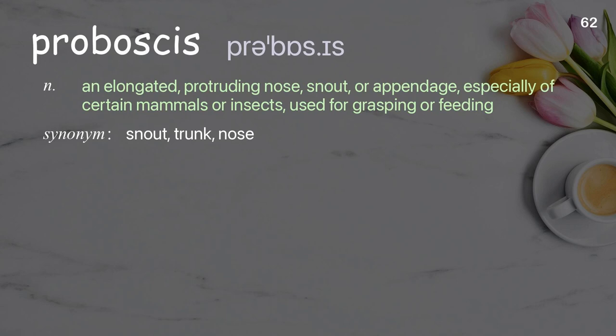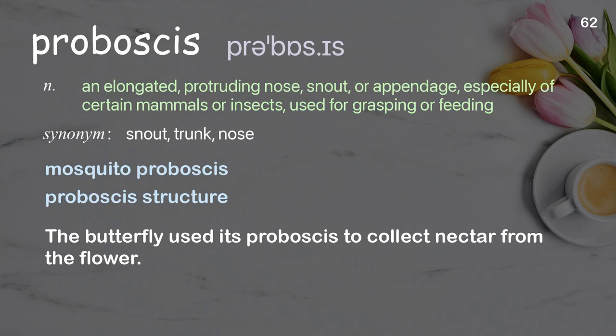Proboscis: An elongated, protruding nose, snout, or appendage, especially of certain mammals or insects, used for grasping or feeding. Examples: mosquito proboscis, proboscis structure.